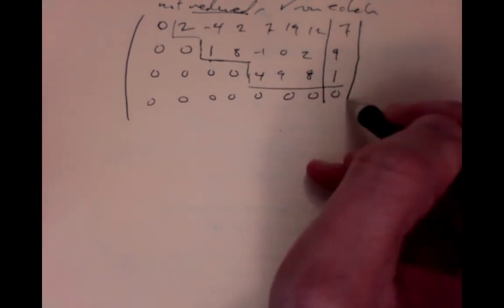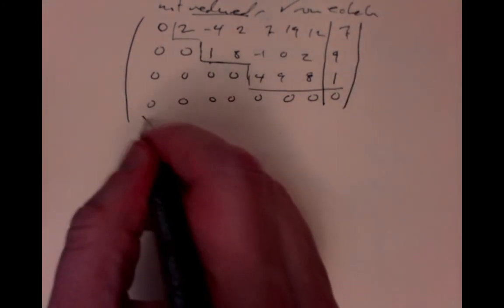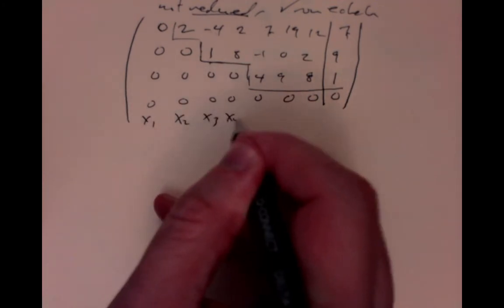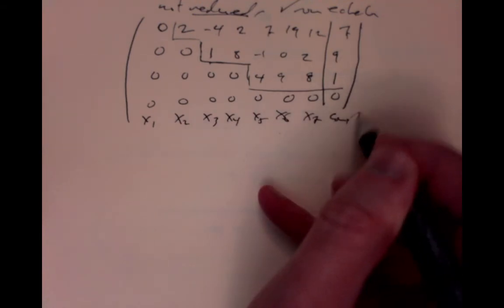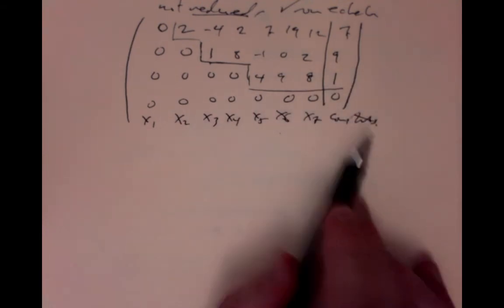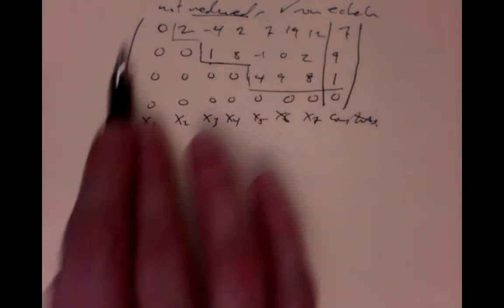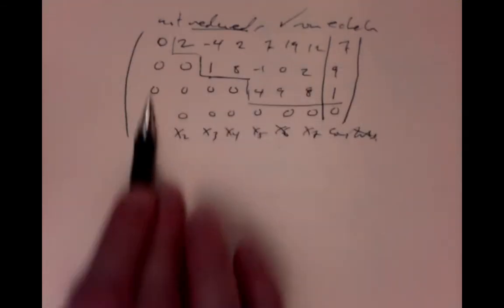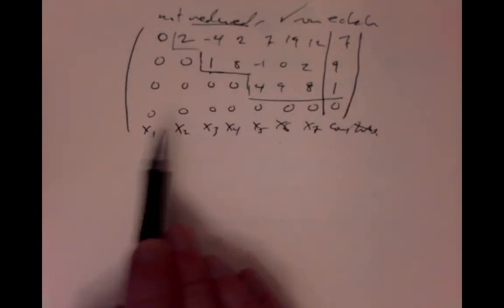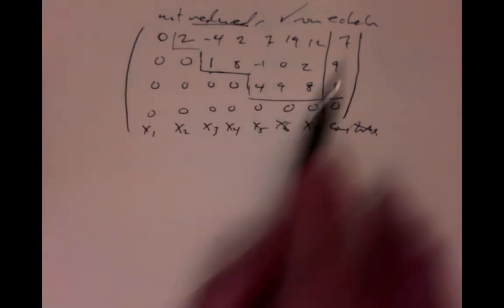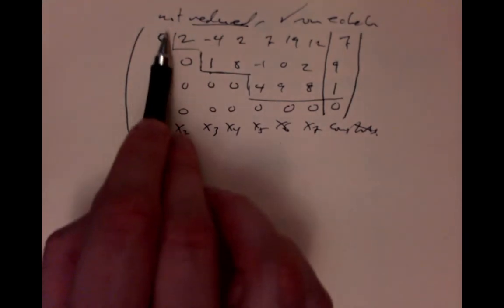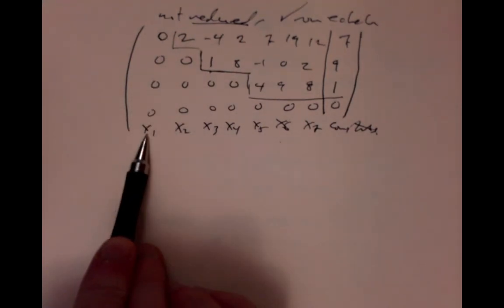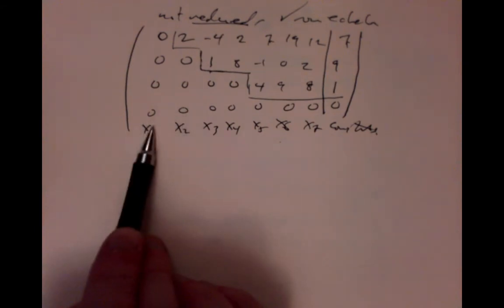If you think of these as linear equations with variables x1, x2, x3, x4, x5, x6, x7, and these are the constants in the augmented matrix, you can see, for example, that there's no pivot in the x1 column — they're just all zeros. That tells you you can't say anything about x1; these equations don't actually contain the variable x1. So there's no information in these equations about what x1 is.